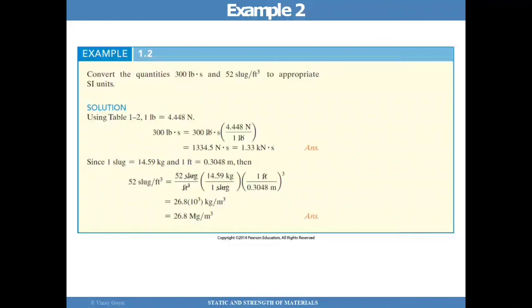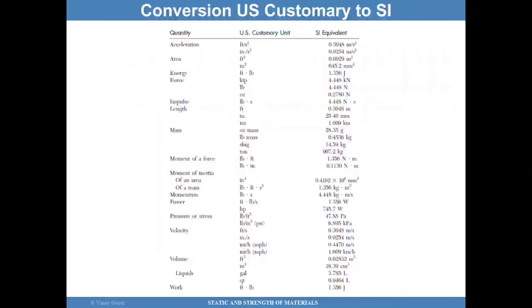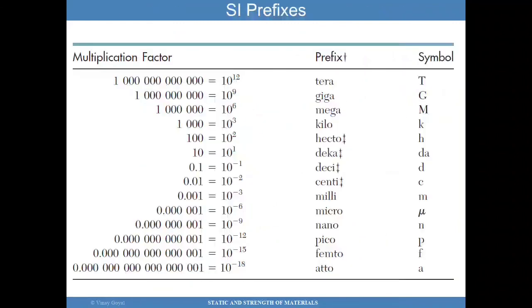Then you can now work it out. And you have that 300 pound time second times 4.448 newton divided by 1 pound. Put the 1 pound at the bottom so that the pound cancels out. And then you're able to now multiply everything out, and you get 1,334.5 newton times seconds. And the 1,334 newton can be changed to kilonewtons using the prefixes that we have previously discussed in this chart. And you can see here, 1,000, 10 to the 3 is kilo, kilonewtons.